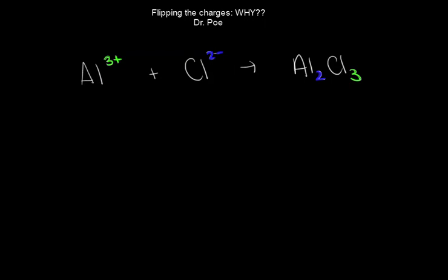I just want to take a really quick second to explain why we flip the charges. For example, with aluminum ion interacting with chloride ion to make aluminum chloride.